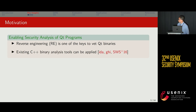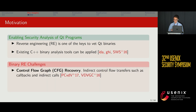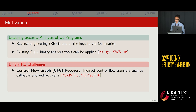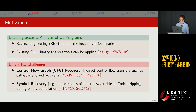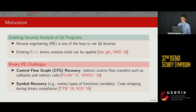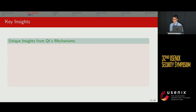While there are many existing C++ binary RE tools that can be applied, they still need to address many fundamental binary RE challenges. We highlight two main challenges: the first is control flow graph recovery due to indirect control flow transfers such as callbacks and indirect calls; the second is symbol recovery — names and types of functions and variables — which are very valuable but challenging due to code stripping during binary compilation. Interestingly, a new domain often comes with new insights.